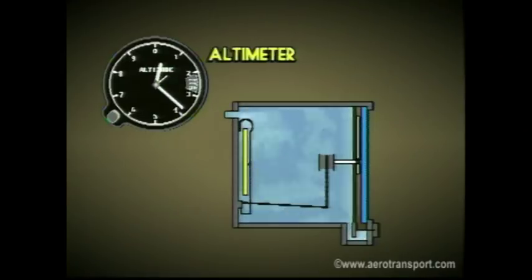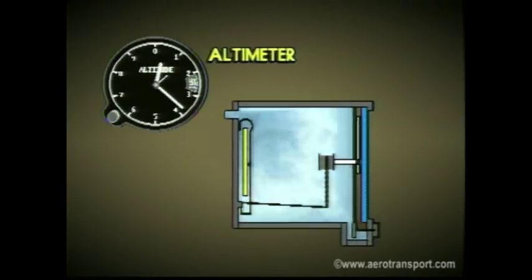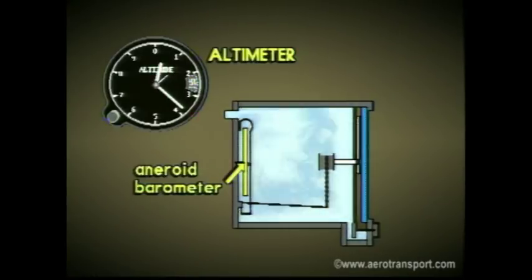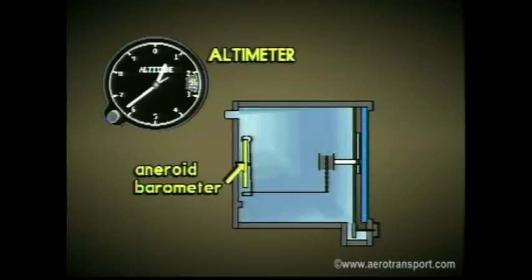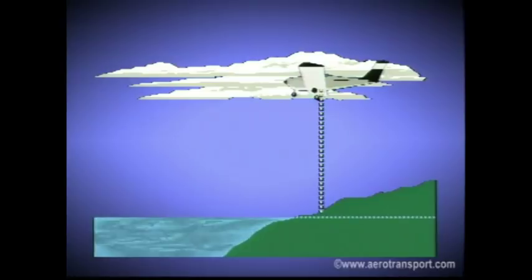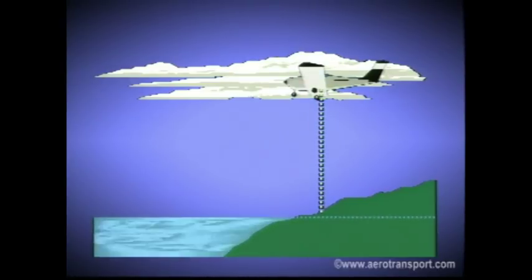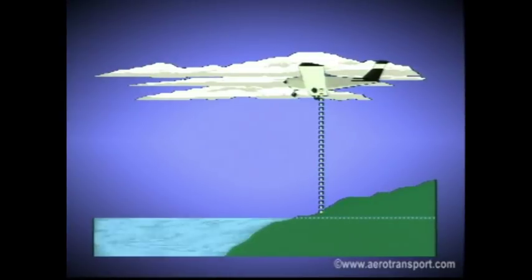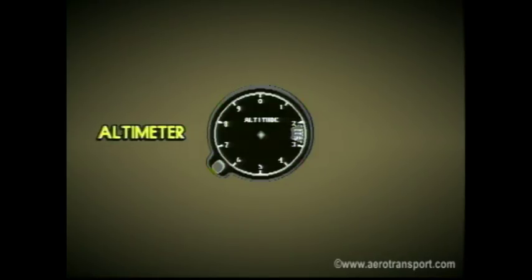The final instrument connected to the pitot static system is the altimeter. It is an aneroid barometer that measures air pressure. Decreases in air pressure are shown as increases in height. Altimeters are calibrated to a tolerance of plus or minus 20 feet at sea level. If your altimeter setting compared to a known altimeter reading is out by more than plus or minus 50 feet, have it checked by maintenance. The face of the altimeter has three hands: the largest records altitude in hundreds of feet, the next largest shows thousands of feet, and the smallest records units of 10,000 feet.